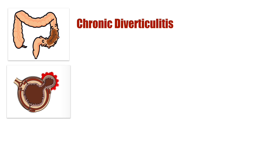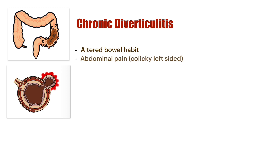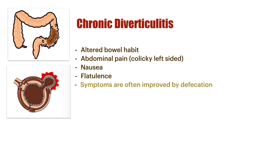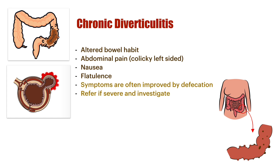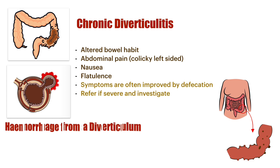But what happens when this just niggles on? We can have chronic diverticulitis occurring — something a little more subtle but still troublesome. It presents as an altered bowel habit, abdominal pain focused around the left side — a colicky left-sided pain — nausea, and flatulence. These symptoms are quite often resolved or improved by defecation. This needs to be referred if severe and investigated appropriately.